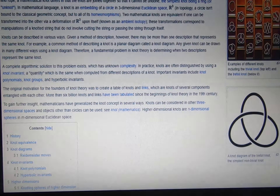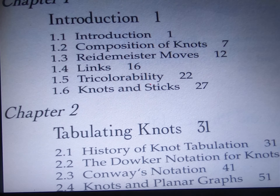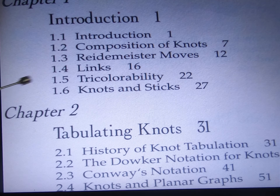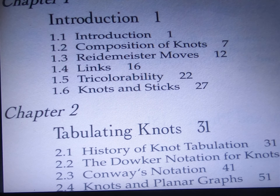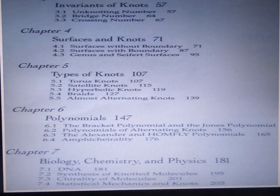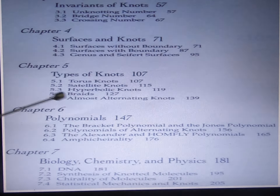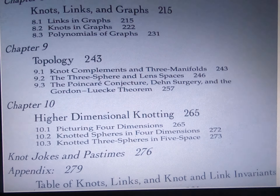I'll give you more examples of all kinds of knots. We will go through the definition of a knot, what kind of knot, and how to tabulate the knot. Eventually we will go to chemistry — chemical knots. Then invariants of knots, surfaces of knots, and types of knots. There are three types: torus knot, satellite knot, and hyperbolic knot. At the end we will discuss some applications.